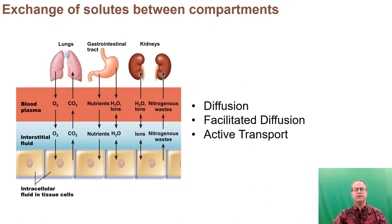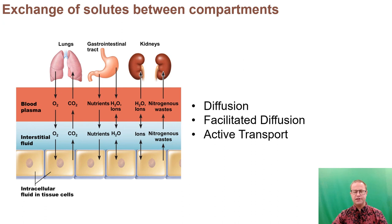Before talking about how we exchange fluids between compartments, let's discuss how we exchange nutrients and other molecules. This can occur in one of three ways: diffusion, facilitated diffusion, or active transport. Diffusion is simply the movement of something from an area of high concentration to low concentration — this is what happens in the respiratory tract, where oxygen diffuses from the alveoli into blood capillaries, and in the tissues where oxygen diffuses in and CO2 diffuses out.